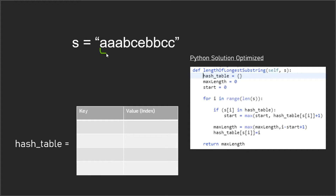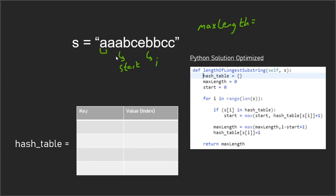Starting at index zero, we examine element 'a' and check if it's in the hash table — it's not, so we skip the duplicate-handling line. The variable max_length keeps track of the answer we want to return, starting at zero. If we have a substring longer than the current max, we update it using i minus start plus one. For example, if the current index i is six and the start is two, then six minus two plus one equals five, giving us the correct window length.